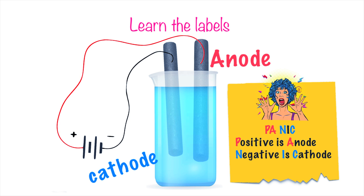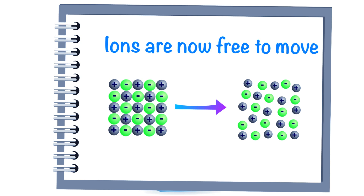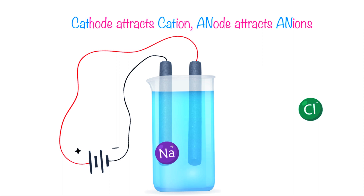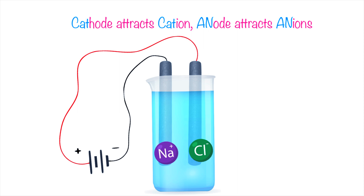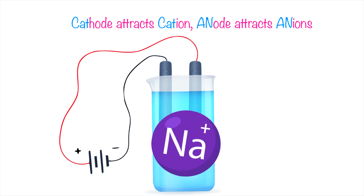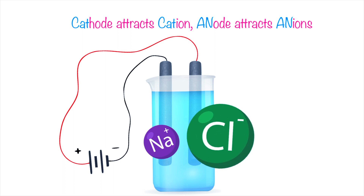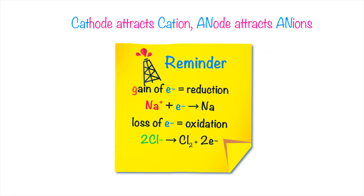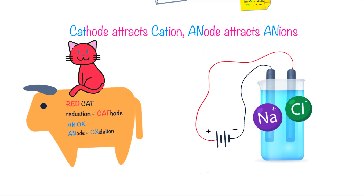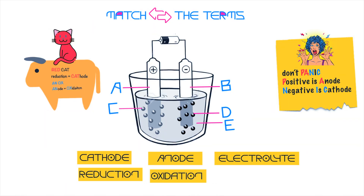Once we turn on the electricity, the ions start to move toward the electrodes. Positive ions — like sodium ions — migrate to the cathode, and negative ions — like chloride — go to the anode, because opposite charges attract. At the cathode, sodium ions gain electrons, which is reduction. At the anode, chloride ions lose electrons, which is oxidation. So during electrolysis: positive ions (cations) are attracted to the cathode where reduction takes place, and negative ions (anions) are attracted to the anode where oxidation takes place.